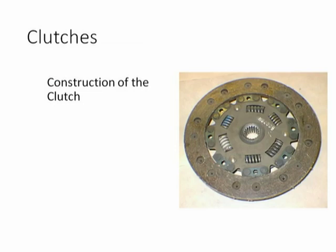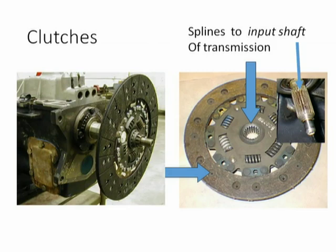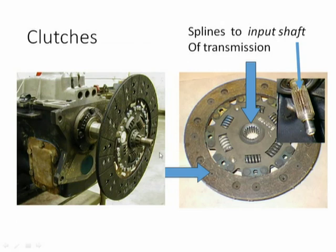Let us look at the construction of the clutch. The clutch assembly comprises the clutch plate or friction disc, which has splines at the center. These splines are fitted onto the input shaft. When power is given from the engine, it should go to the gearbox, and in turn power flows from the gearbox to the wheels through the differential. The power from engine to gearbox is taken care of by the friction plate.